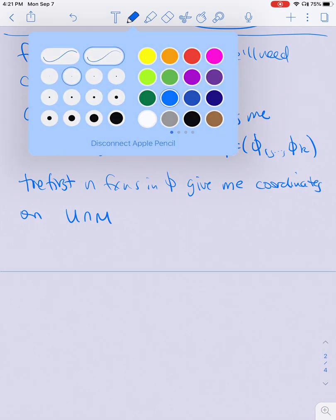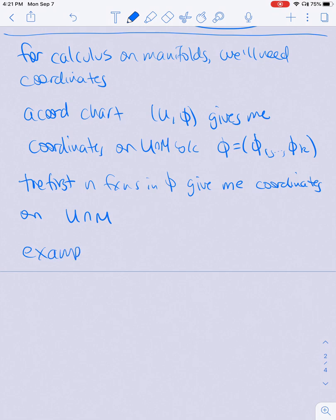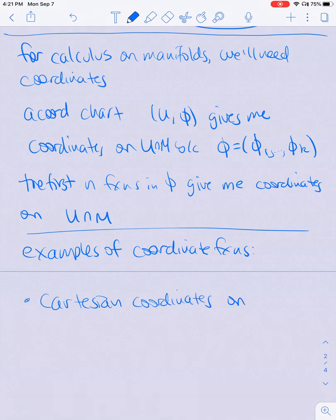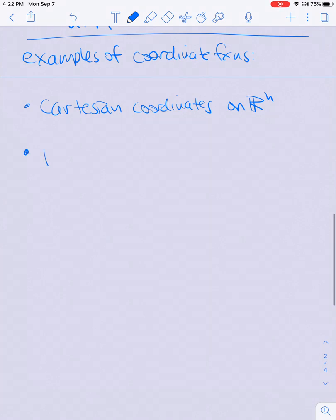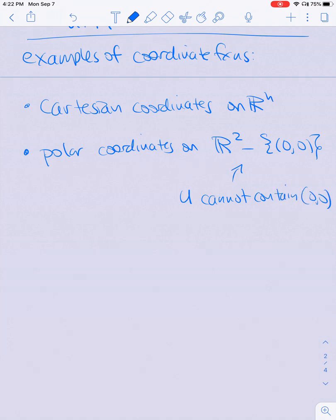There are more types of coordinates. So examples of coordinate functions: obviously there's the regular Cartesian coordinates on Euclidean space. You may have seen polar coordinates on R^2, but you can't include the origin. What this means is you cannot contain the origin, otherwise these polar coordinates aren't really well defined.